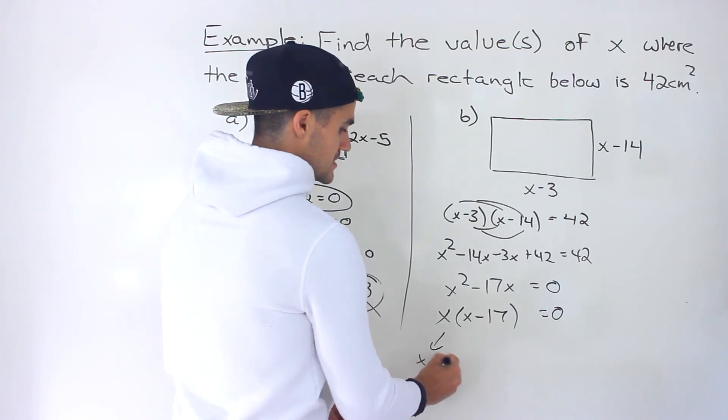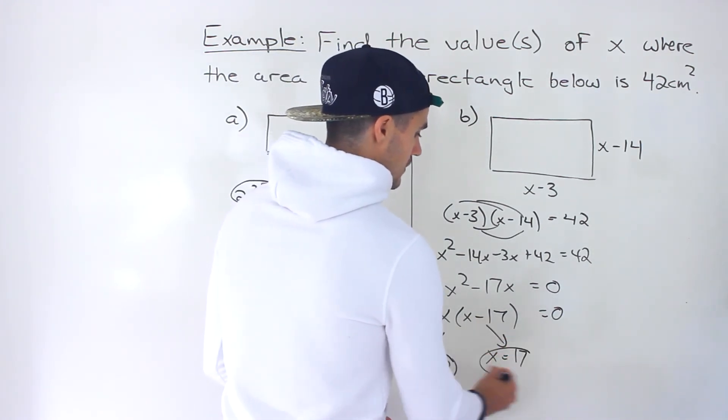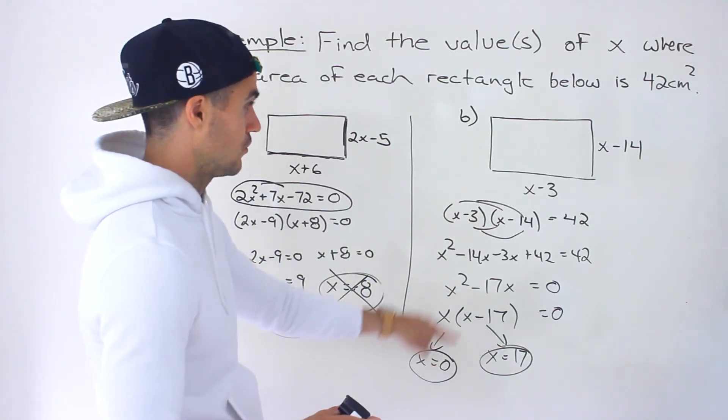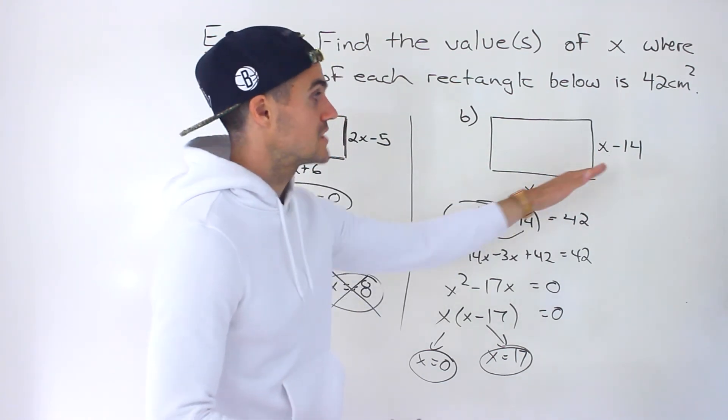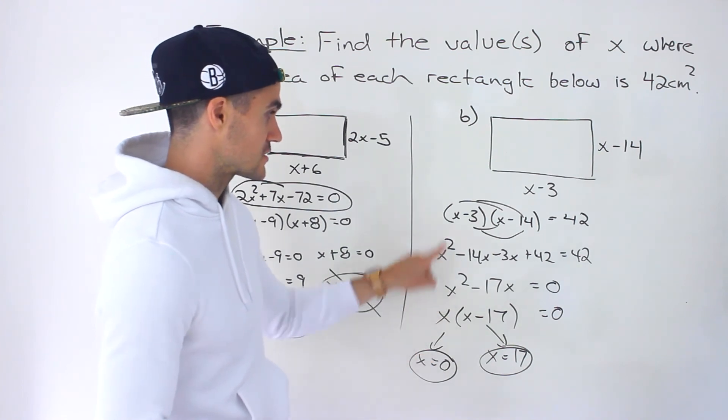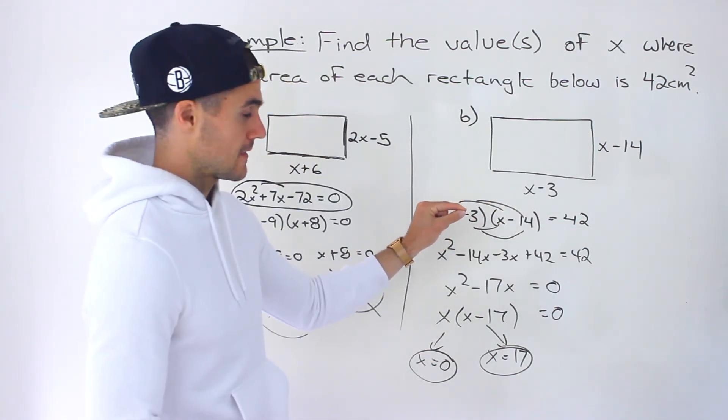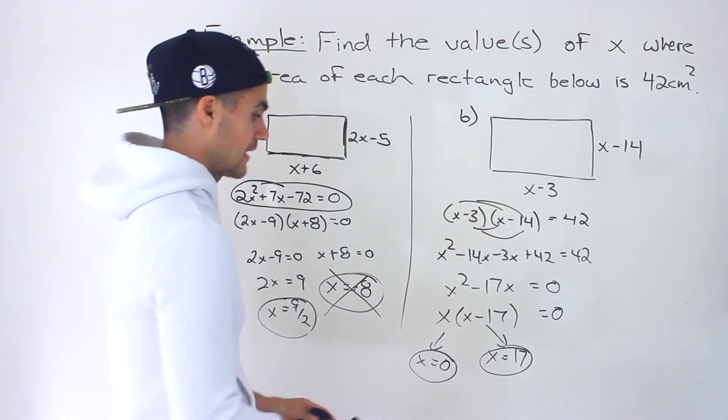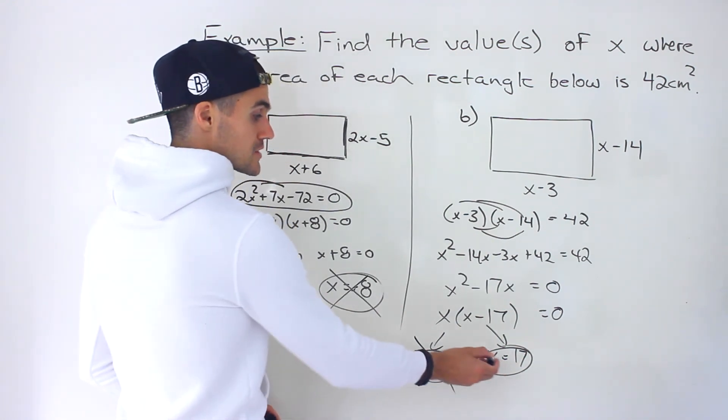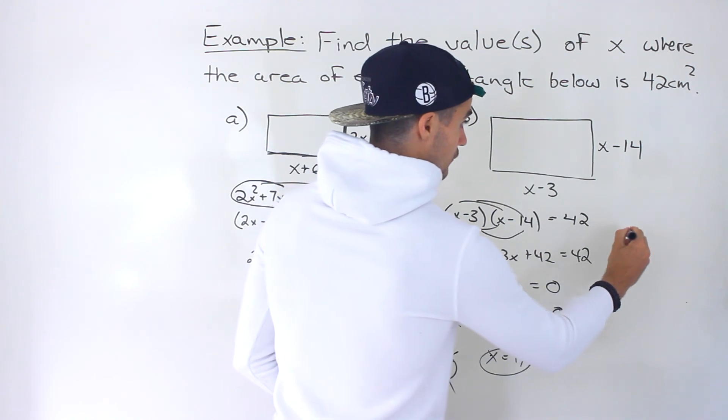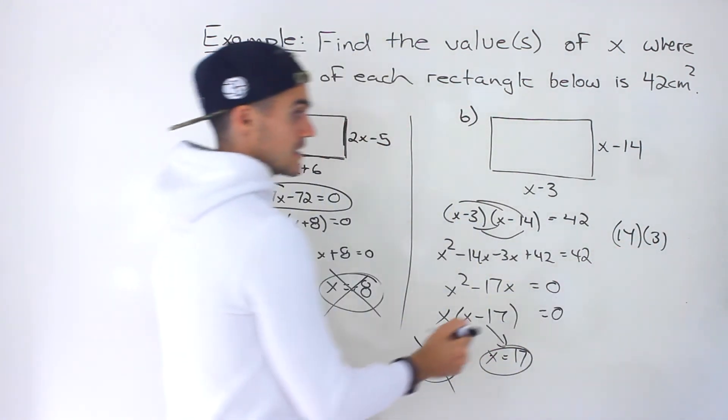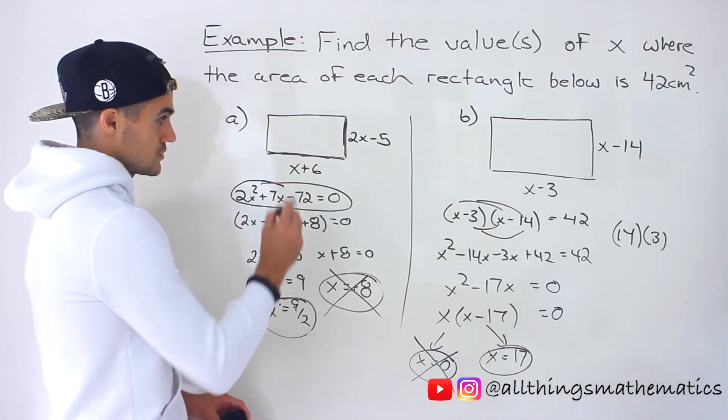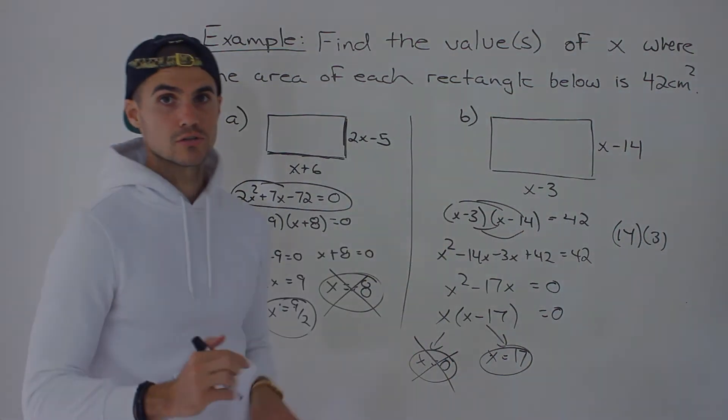And so notice that x can either be 0 or x can be positive 17. Those are the two solutions. But again you got to take these solutions plug them back in make sure that they make sense. Notice that if we plug in 0 for x we'd end up with negative 3 and negative 14. And negative 3 times negative 14 does indeed give us 42. So that is a valid solution for this abstract equation for not dealing with a word problem. But when we take it and apply to the word problem we get a negative length negative width that can't happen. So this would not be a valid solution. But notice x equaling 17 we'd end up with a length of 14. We'd end up with a width of 3 over here. 14 times 3 does indeed give us 42. So x equals 17 is a valid solution. So 9 over 2, x equals 9 over 2 is the only solution for part A. x equals 17 is the only solution for part B.